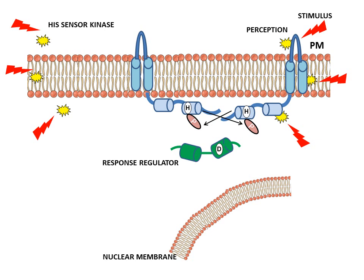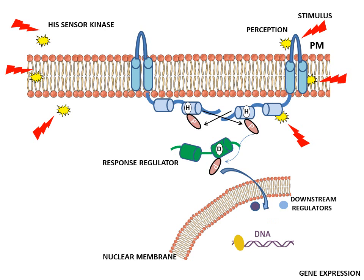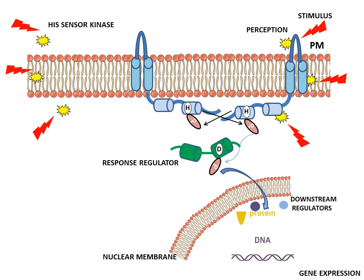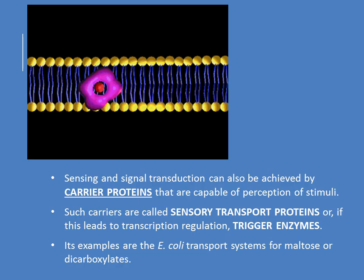As soon as the stimulus is perceived, there is dimerization and then transphosphorylation, in which the histidine residues present in the C-terminal transmitter domain get phosphorylated. Following this, the transmitter domain transmits the signal through phosphorylation of an aspartate residue of the response regulator. The response regulator may then directly perform functions relevant to gene expression, or downstream target molecules in the phosphorylation cascade further effect differential gene expression in response to stress.